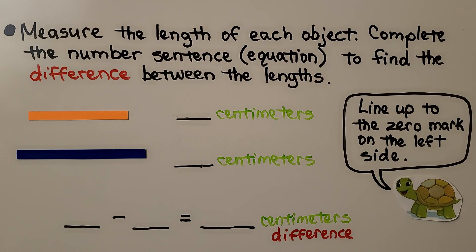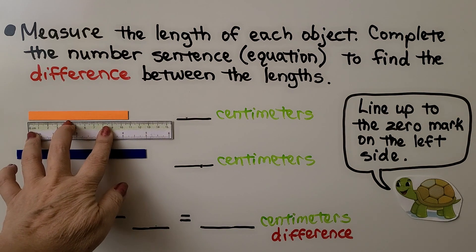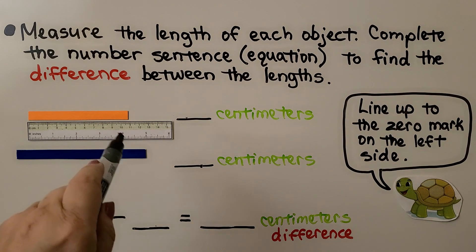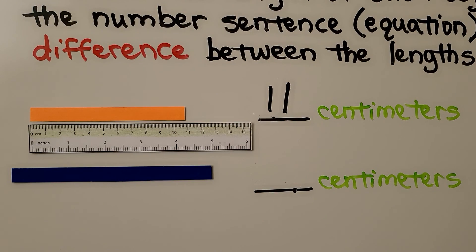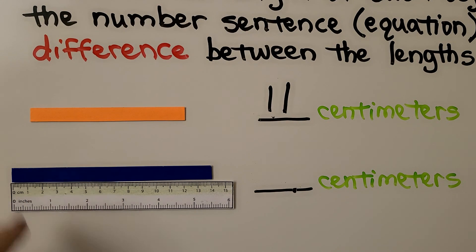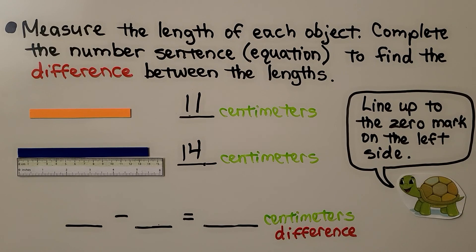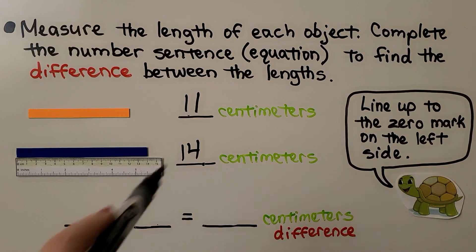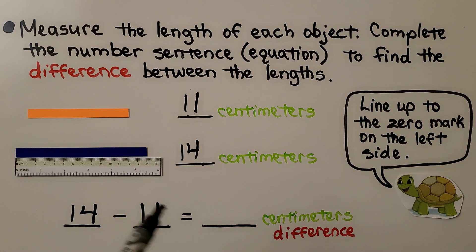Here we need to measure the length of each object and complete the number sentence to find the difference between the lengths. We have an orange line and a blue line. We line up our ruler with the zero mark on the left side of the orange line — it's 11 centimeters. Now we measure the blue line by lining up our ruler with zero, and we see it's at 14 centimeters. We need to subtract to find the difference. We use the greater number, 14, as the minuend, and the lesser number, 11, as the subtrahend. Do you know what 14 minus 11 equals?